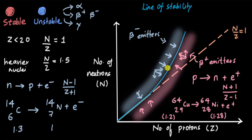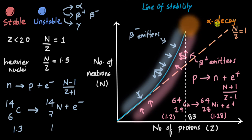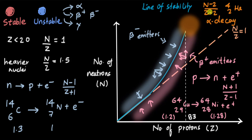For atoms with atomic number more than 83 — the last stable nucleus — the nuclei are too large and need to get rid of some protons very quickly. What happens is alpha decay: an alpha particle (a helium nucleus with two protons and two neutrons) is emitted. The nucleus gets rid of two protons and two neutrons right away, so the new ratio becomes (n−2)/(z−2), and the unstable nucleus is pushed toward the line of stability.